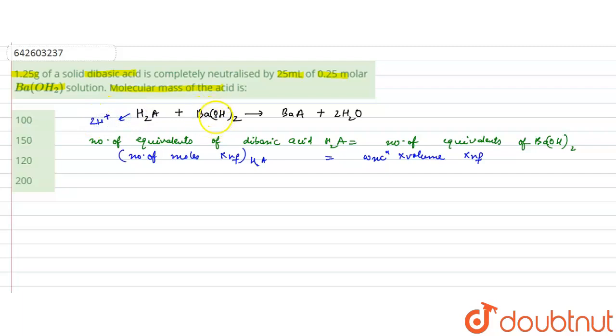Here the n factor for H₂A will be 2 as it is dibasic acid, so it will give 2H+ ions. And the n factor for barium hydroxide will also be 2 as it will give either barium 2+ or 2OH⁻ ions. So the net charge on the ions will be plus 2 or minus 2, so its n factor is also 2.